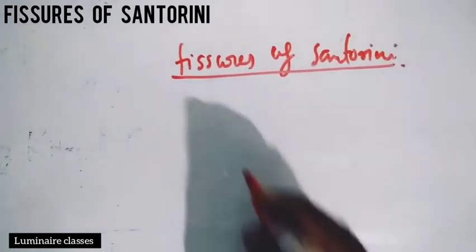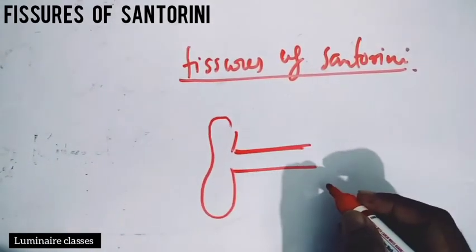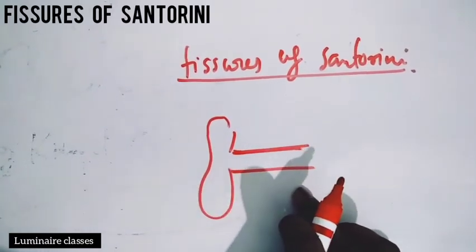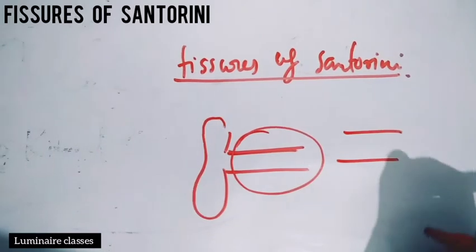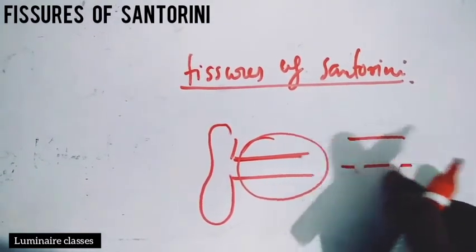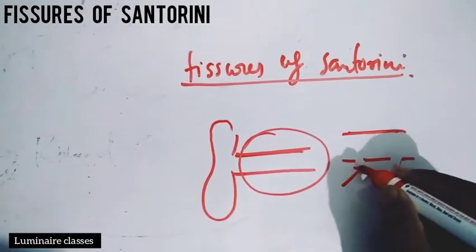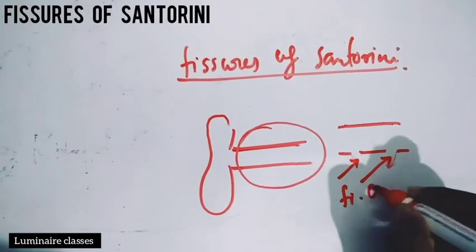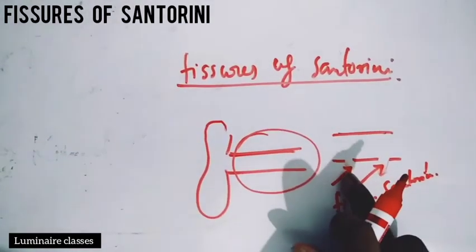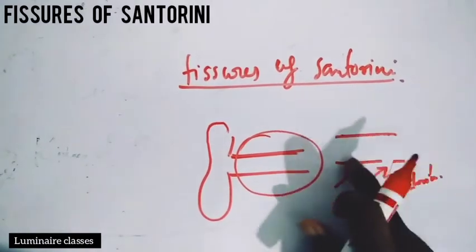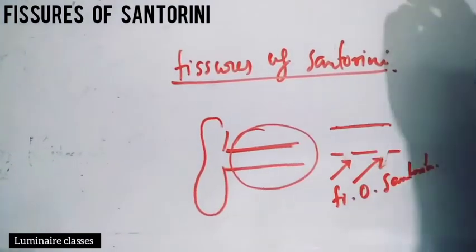So what are the fissures of Santorini? They lie in the cartilaginous part — the initial segment of the external auditory canal. In the cartilaginous segment, in the antero-inferior portion, there are deficiencies of cartilage. Such deficiencies are called fissures of Santorini. So the fissures of Santorini are defined as the deficiencies of the antero-inferior portion of the cartilaginous part of the external auditory canal. Now, how are they clinically important?